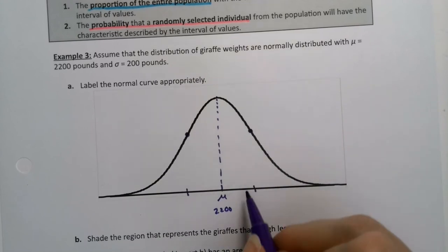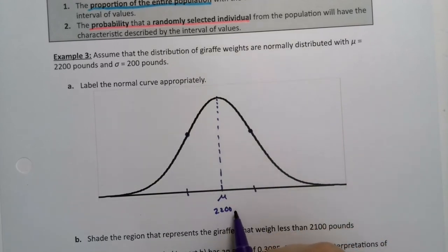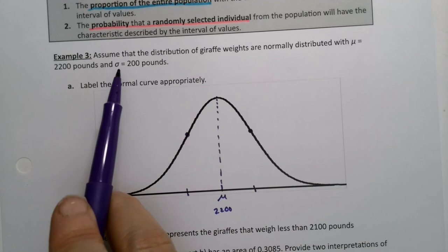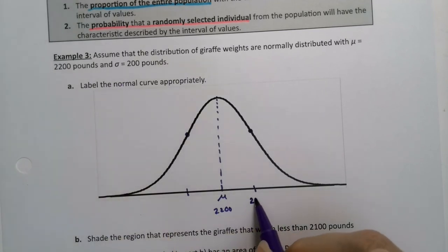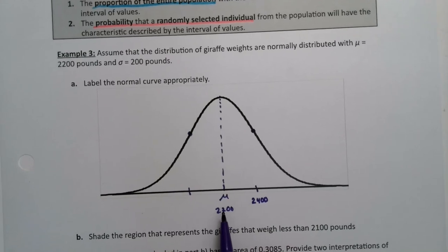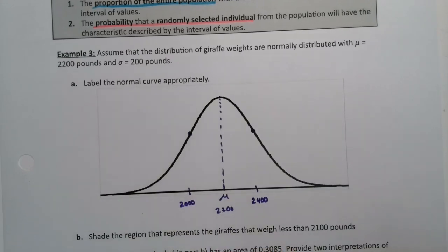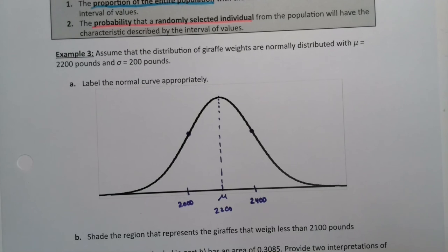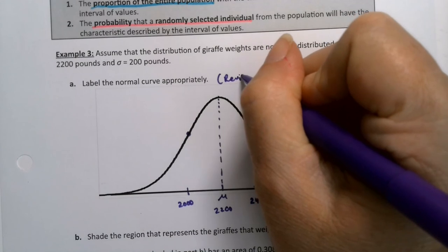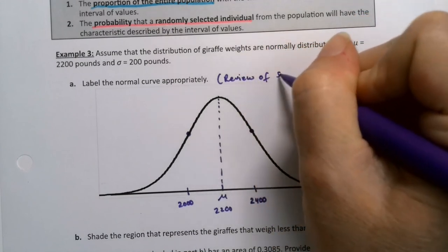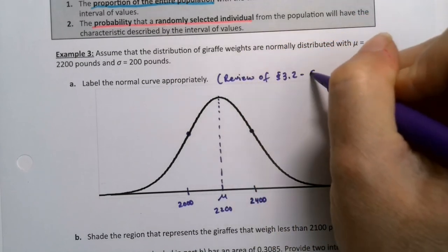We can label that point because we know it's one standard deviation away, and the standard deviation is 200 pounds. So 2,200 plus 200 gives us 2,400 on the right, and 2,200 minus 200 gives us 2,000 on the left. If you're thinking that looks familiar, yes — we did this before in chapter three. This is a little review of section 3.2 when we learned the empirical rule.